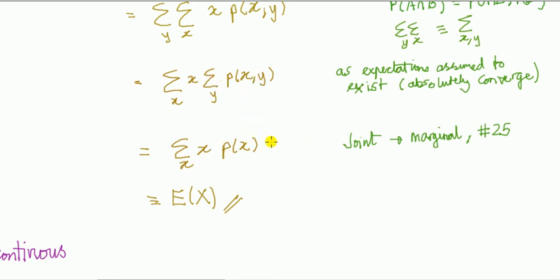Marginal probability mass function for x. So, from joint to marginal, that's problem 25, if you want that explained. This is that right definition. So, we're done.